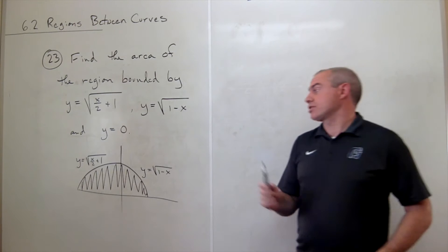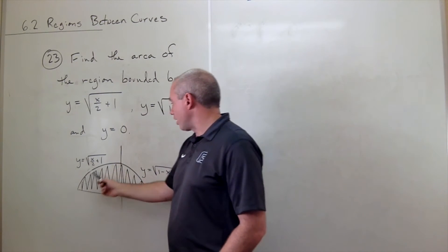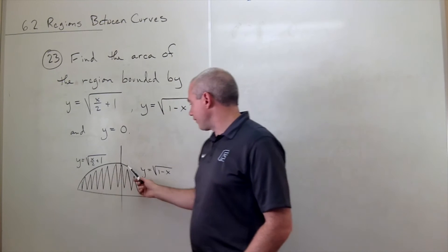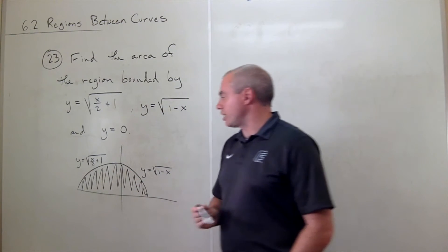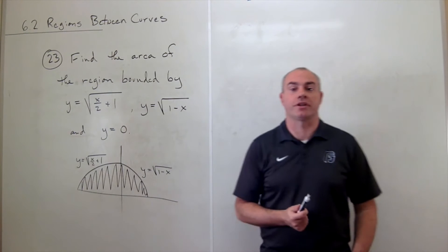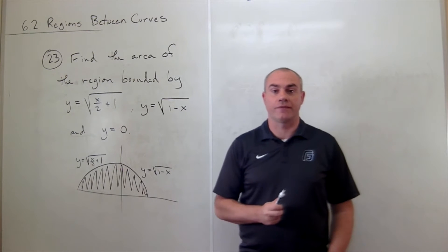So I drew a little picture here. We've got our first curve, we've got our second curve, we've got the x-axis, and the shaded region is what we're trying to find the area of.